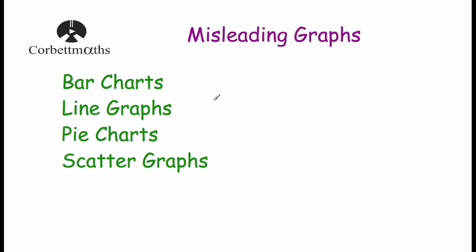That's a really useful skill, particularly if you're looking at graphs or charts in the newspapers or in the media or as part of your coursework and assignment at university. It's important to be able to look at it and make sure that it's not misleading, either by accident or even on purpose. So let's have a look at bar charts, line graphs, pie charts and scatter graphs and look at some of the common reasons how they can be misleading.